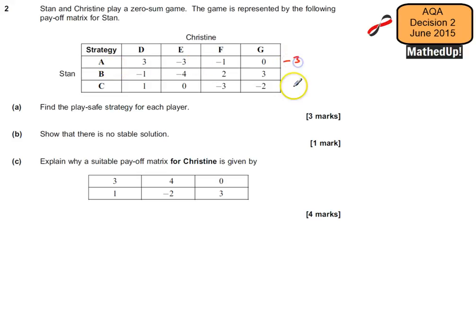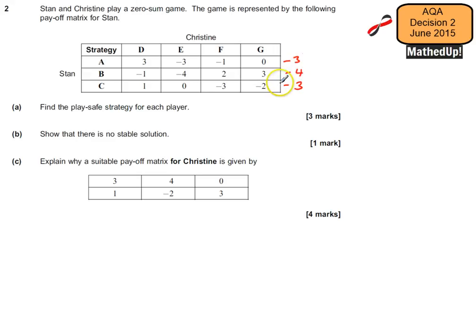So I'm going to put negative 3 here as the worst case scenario. For B his worst case scenario would be negative 4, and for C his worst case scenario would be negative 3. So we're looking for the best of his worst case scenarios, which is going to be negative 3.